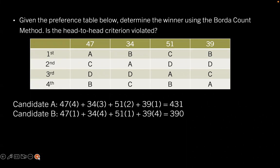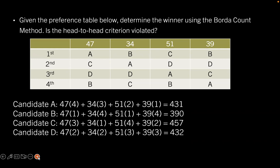Candidate B receives 390 votes. Candidate C receives 457 votes. And candidate D receives 432 votes. So after we have the Borda count voting calculated, we can see that candidate C is the winner with 457 votes or points, however you want to look at that, using the Borda count method.